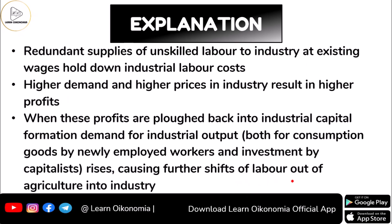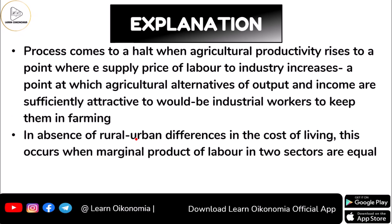There exists unlimited supply of unskilled labor to industry from agriculture, and high demand for products leads to higher profits. This drives more industrial output for both consumption and investment, and causes more labor to be shifted from agriculture to the industrial sector. This process will continue until agricultural productivity rises — when the marginal product of labor in the agriculture sector becomes positive. The process stops when the marginal product of labor in the two sectors becomes equal.